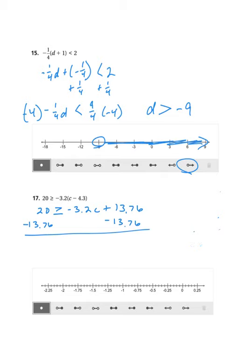So now I'm going to subtract 20.00 minus 13.76. I'll borrow. 10 minus 6 is 4, 9 minus 7 is 2, 9 minus 3 is 6. So this is positive 6.24 is greater than or equal to negative 3.2c.